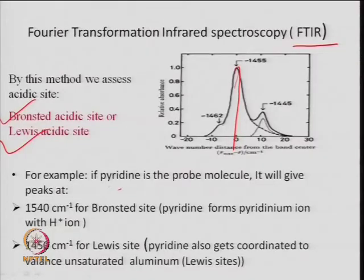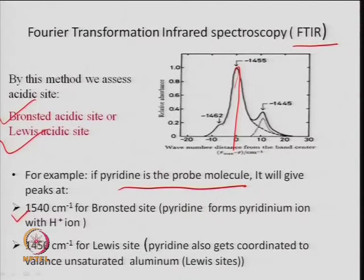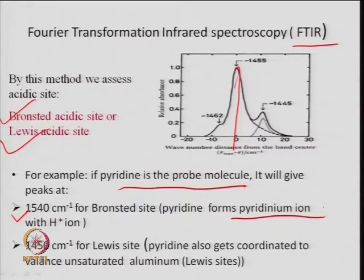If pyridine is the probe molecule, it will give a peak at 1540 cm⁻¹ for the Brønsted site — at that wave number pyridine adsorbed on the catalyst. The adsorption forms a pyridinium ion with hydrogen ion — a stronger acid site means it has a positive ion. For Lewis type acidity, at 1450 cm⁻¹ the pyridine gets coordinated to valence-unsaturated aluminum which is a Lewis site.